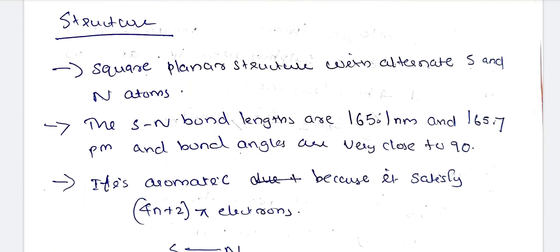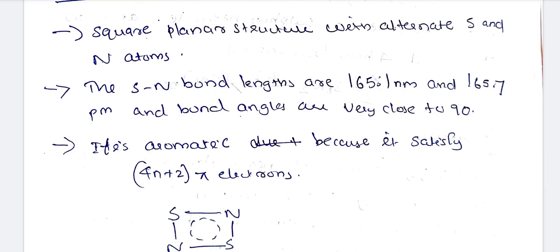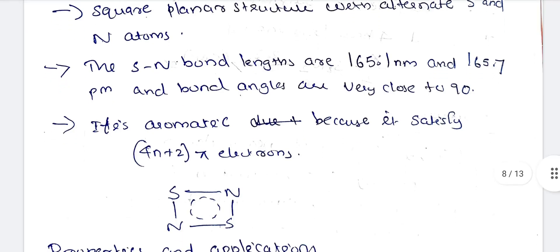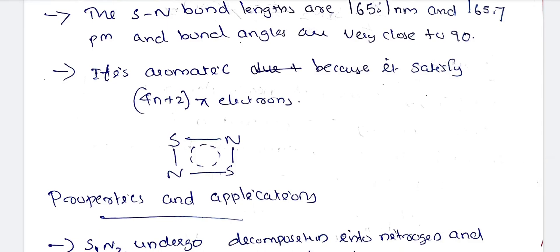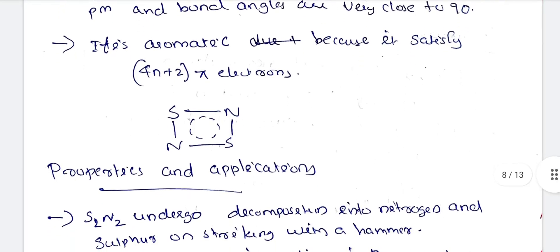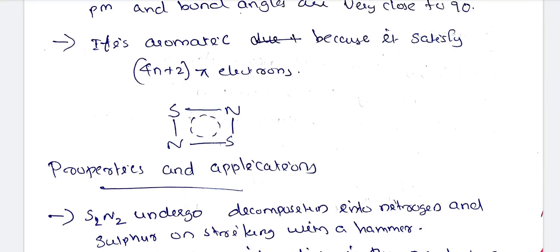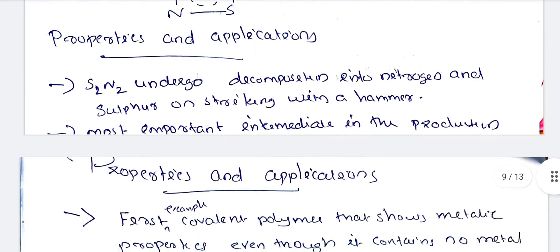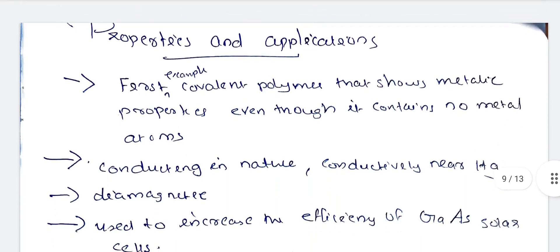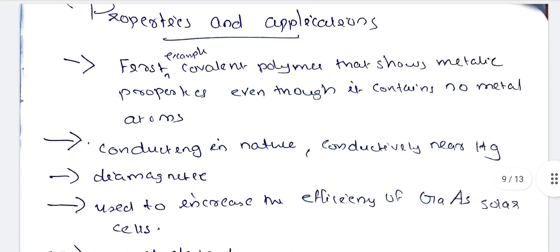The structure of S2N2 is a square planar structure with alternating S and N atoms. The S-N bond length is approximately 165.1 to 165.7 picometers. The bond angle is close to 90 degrees. S2N2 is aromatic, satisfying the 4n+2 pi electron rule. S2N2 undergoes decomposition into nitrogen and sulfur on striking with a hammer. Its application: it is the first covalent polymer that shows metallic properties even though it contains no metal atoms.